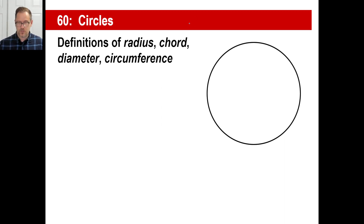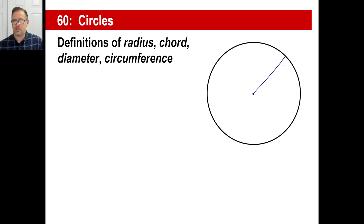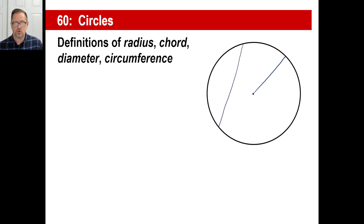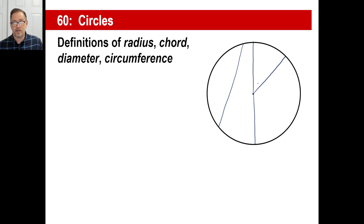Make sure you know these definitions — write them down if you need to. A radius is a line segment that starts at the center of a circle and touches the edge of the circle. A chord is a segment that touches two edges of the circle. A diameter is a chord that goes through the center of the circle — it's like two radii, so a diameter is twice as long as a radius. The circumference is the distance all the way around a circle.